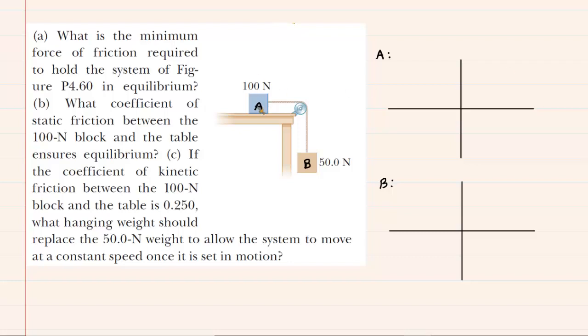We've called the block resting on the surface of the table block A and the one hanging block B. And our first step is to draw the forces that are acting on each block by drawing two separate free-body diagrams.